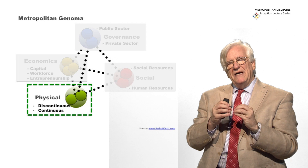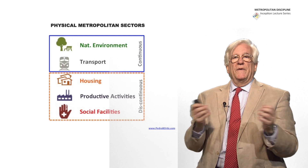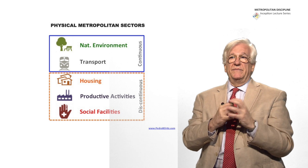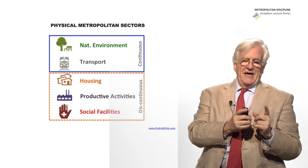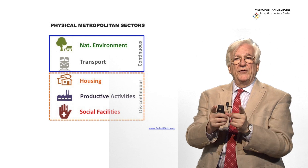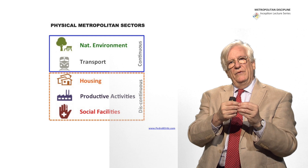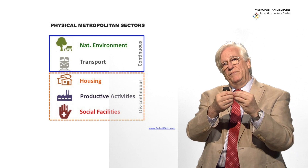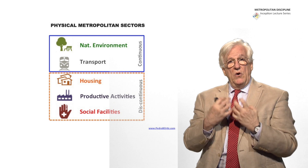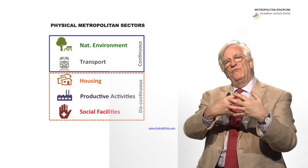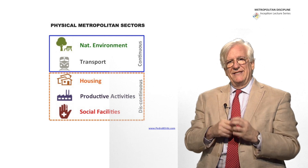The continuous systems are those that have to be together to work. For instance, in the continuous systems, we have the natural environment and the transports. You cannot have a kilometer of train and then nothing and a kilometer of train. The train has to go through. And when you arrive to the station, you have to be able to get down from the train and get into a bus or a BRT or any other means of transport. So really, it has to be a continuous system where contiguity is necessary.